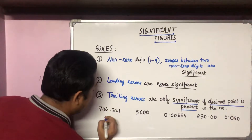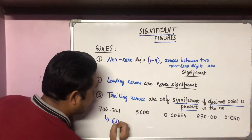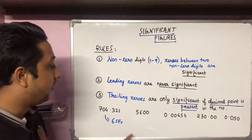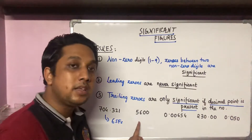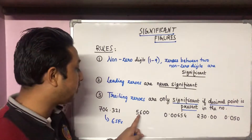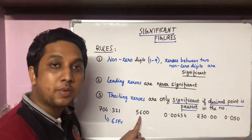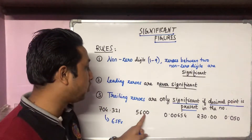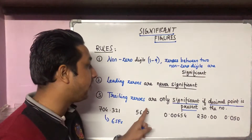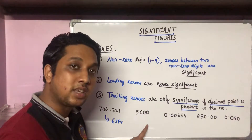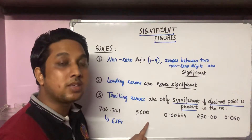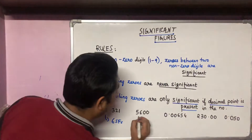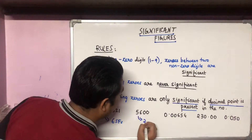5600 — here five and six are significant because they are nonzero digits. The trailing zeros at the last will not be regarded as significant because a decimal point is not present in this number. So we have only two significant figures.